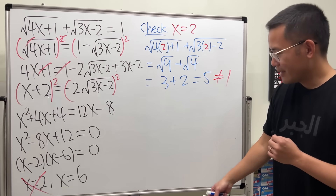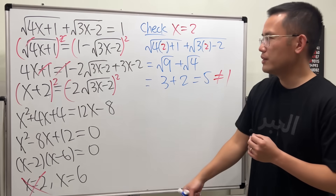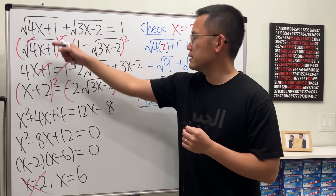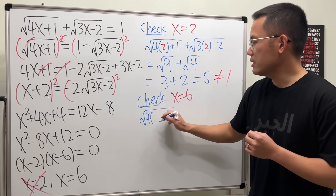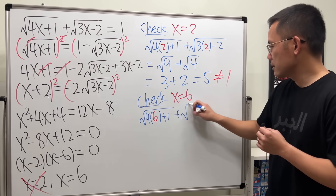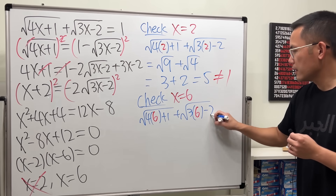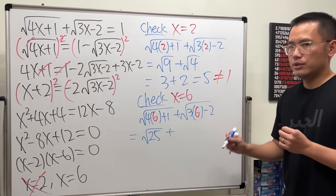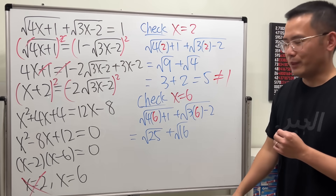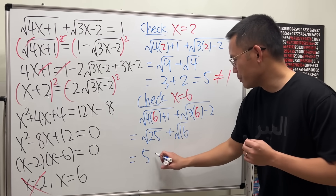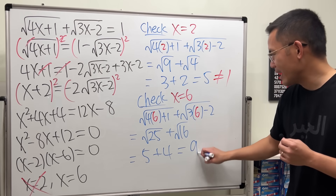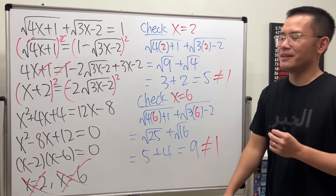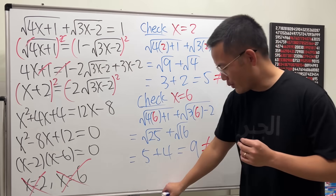Let's check when x equals 6. Plugging in 6: square root of 24 plus 1 is square root of 25, and square root of 18 minus 2 is square root of 16. That's 5 plus 4, which equals 9 — of course not equal to 1. So this is also not an answer. The answer for this equation is no solution.